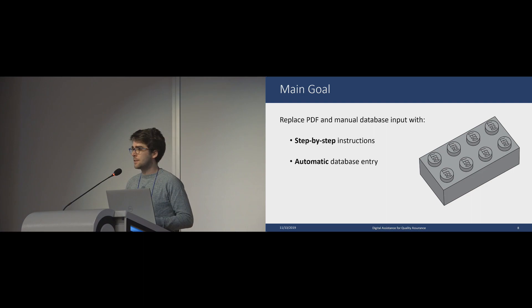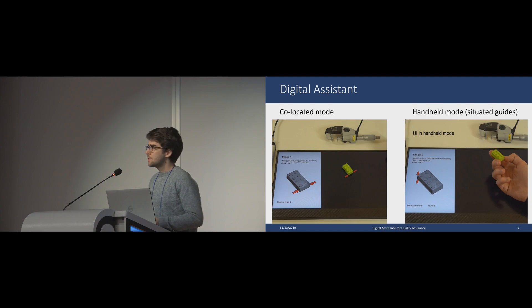The main goal of our assistant is to replace these PDF instructions and the manual insertion with step-by-step co-located instructions and automatic database entries. Our digital assistant has two modes that we call co-located mode and the handle mode. The co-located mode gives situated instructions on the surface and on the brick itself. This is our default mode. We use this mode every time it is possible.